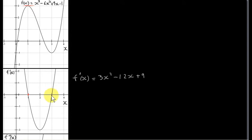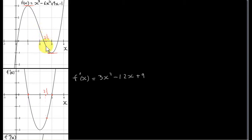Similarly, at x equals 3, f prime of 3 is 0, which means that the slope of the tangent to the graph of f of x at x equals 3 is 0 — so we have a horizontal line at x equals 3. At x equals 2 and a half, we have this value here, which is minus 2. f prime of 2 and a half is minus 2, meaning that at x equals 2 and a half on this graph, the slope of the tangent is minus 2.